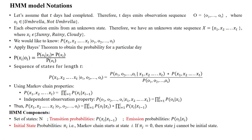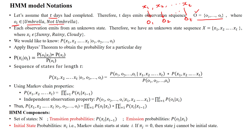Now, how can we denote this given system using mathematical notations? Let's assume T number of days are completed. For T days, each day is assumed as one state: x1 is day one, x2 is day two, and so on up to xT. Each day will generate an observation — x1 generates observation 1, x2 generates observation 2, etc. This is denoted with capital O, the set of observation states. The observation state has two possibilities: either the person is carrying an umbrella or not carrying an umbrella.